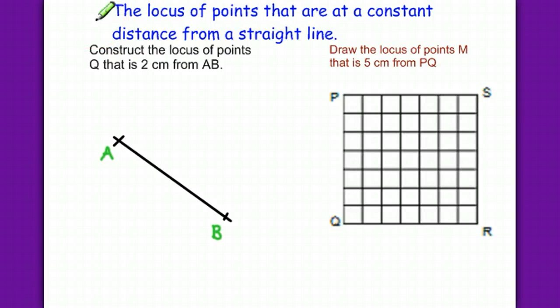Assalamualaikum. Today we are going to talk about the locus of points that are at a constant distance from a straight line. The locus is a parallel line, two parallel lines actually, up and down.